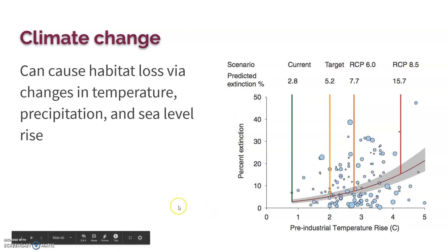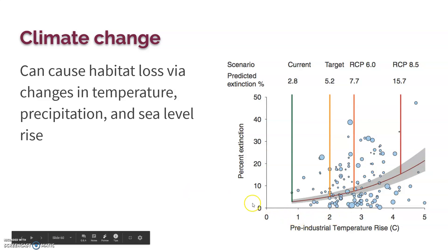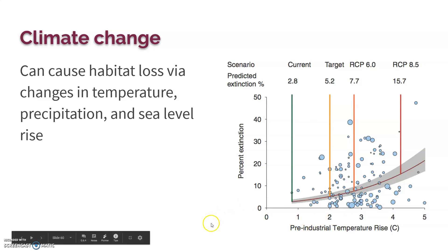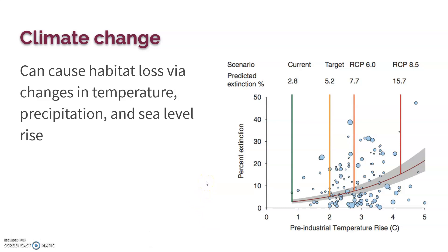Climate change can cause habitat loss through changes in temperature, precipitation, and sea level rise. As global temperatures rise, the percentage of possible extinctions increases as well — especially for species that cannot move to a new habitat.